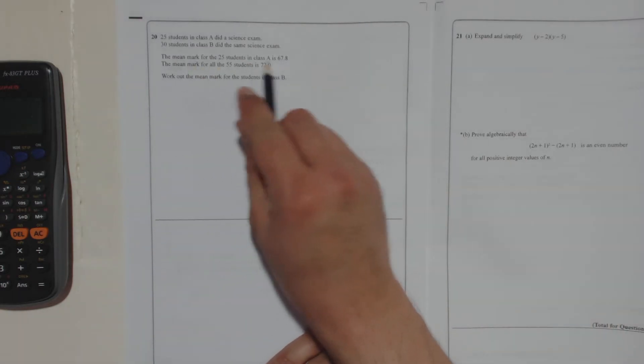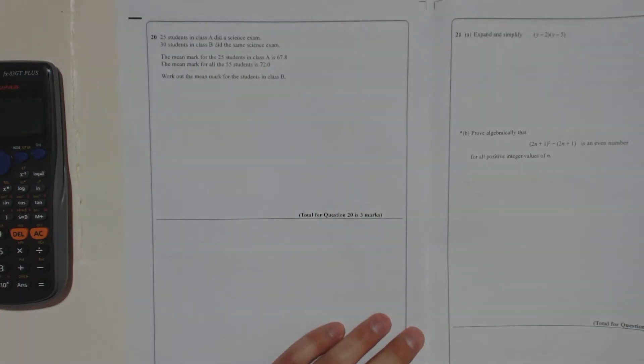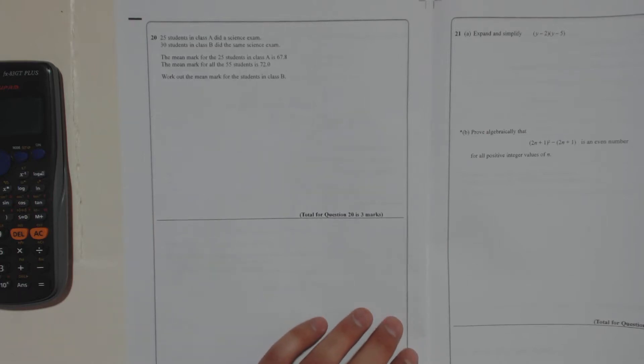So we've got the mean for A, we've got the mean for B. It seems like it might be a tough question, but when you're finding means, it's all about finding totals.